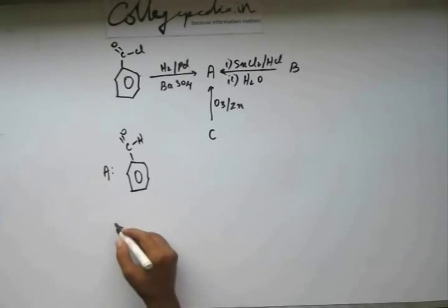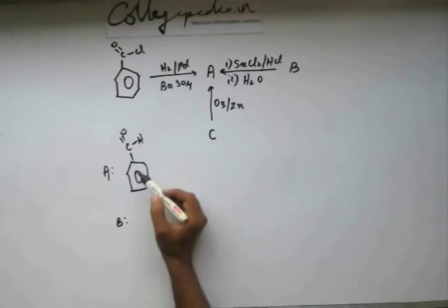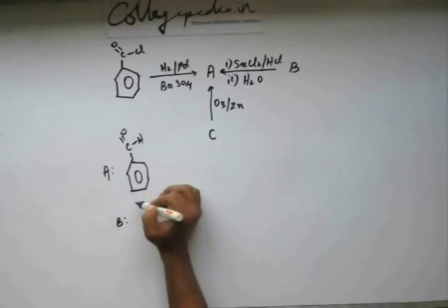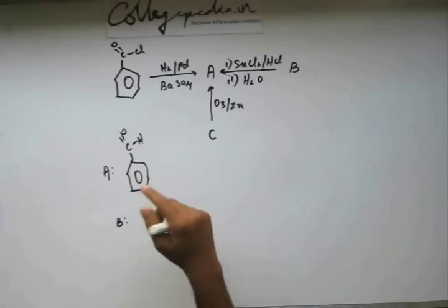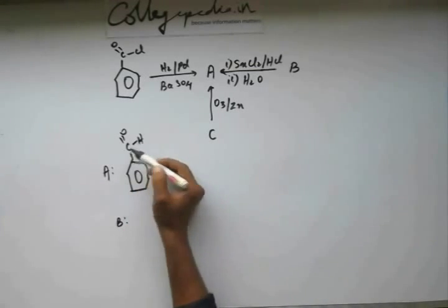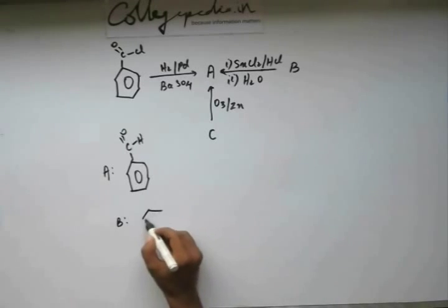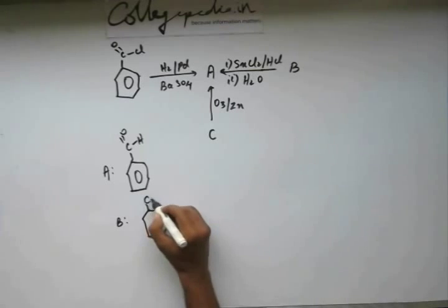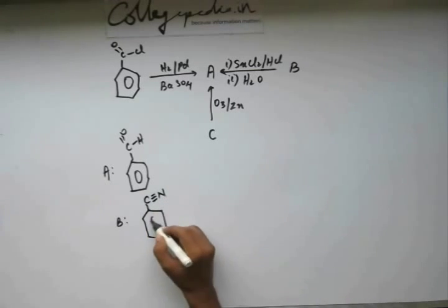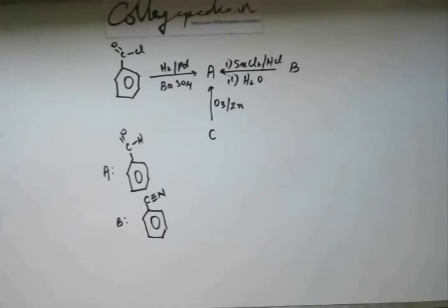Looking at the structure of A, it won't be difficult to find out the structure of B. In this aromatic ring there will be no reaction. Whatever the reaction has to occur, it has to occur outside the ring. Outside the ring I can cite one carbon, so that carbon has to be in cyanide group like this. This is benzonitrile or cyanobenzene. So this is B.